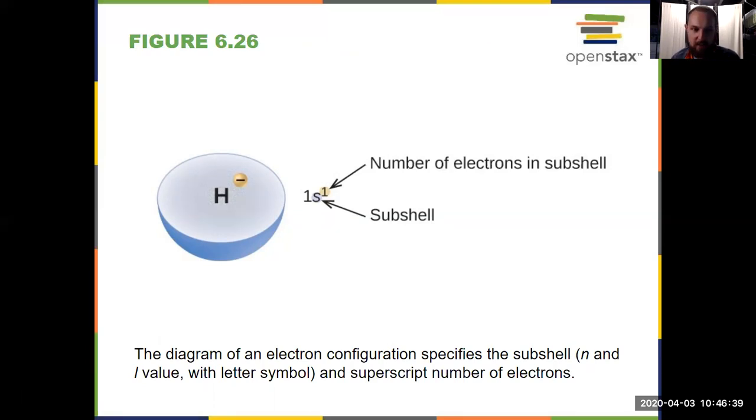Now the S subshell maxes out at two electrons. The P subshell, because it has three different orbitals within that subshell, and they can each hold two, maxes out at six. The D subshell maxes out at 10, and the F subshell maxes out at 14.